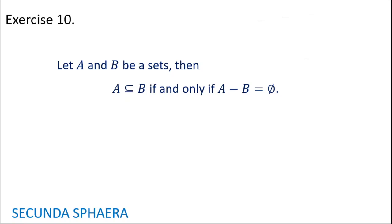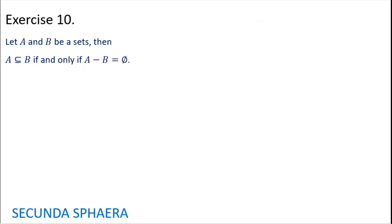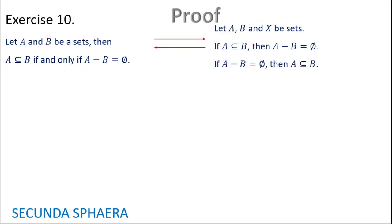Moving on to exercise 10, the last of this part. Let A and B be sets. Then A is contained in B if and only if A without B is equal to the empty set. This exercise is an equivalence, so it is recommended to break it into two implications: first, if A is contained in B, then A without B equals the empty set; second, if A without B equals the empty set, then A is contained in B.